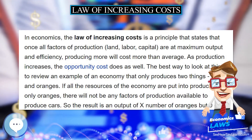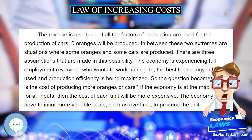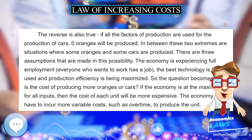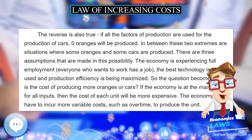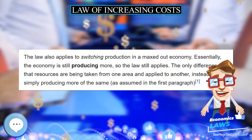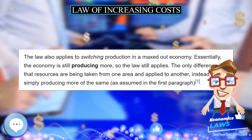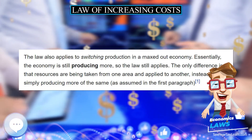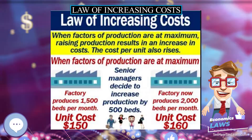The reverse is also true: if all the factors of production are used for the production of cars, zero oranges will be produced. In between these two extremes are situations where some oranges and some cars are produced.